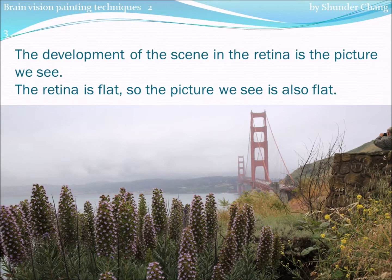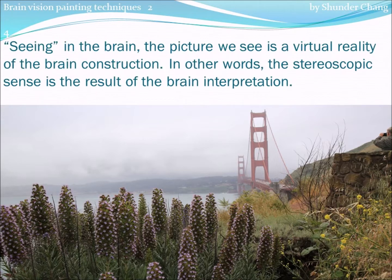The retina is flat, so the picture we see is also flat. Seeing in the brain, the picture we see is a virtual reality of the brain's construction. In other words, the stereoscopic sense is the result of the brain's interpretation.